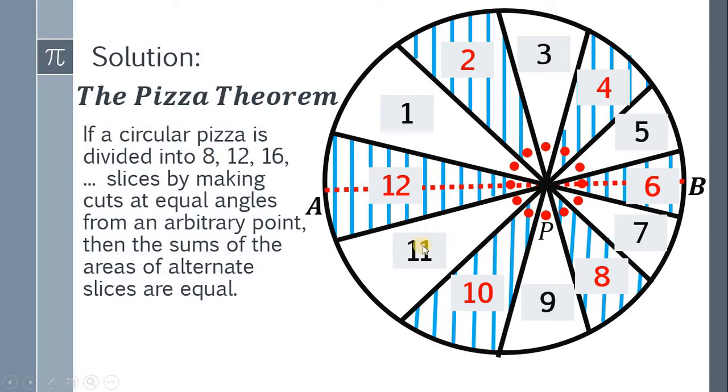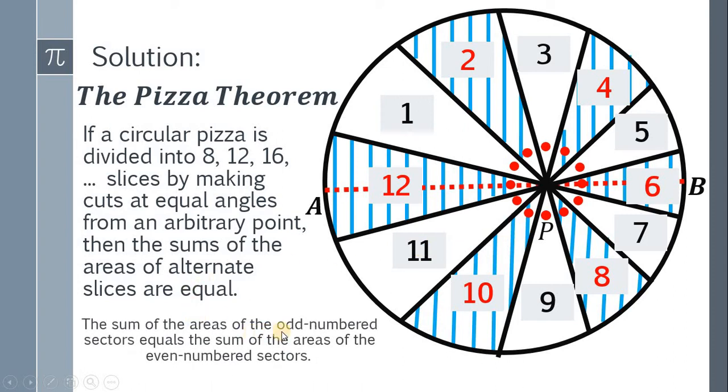Based on our illustration, it follows that the sum of the areas of odd-numbered sectors equals the sum of the areas of even-numbered sectors.